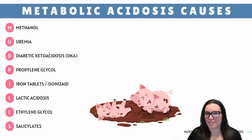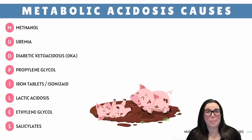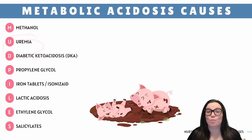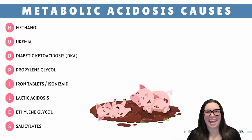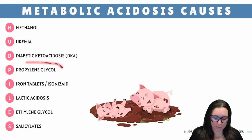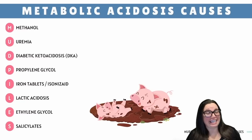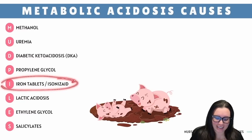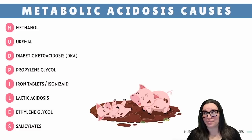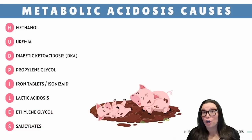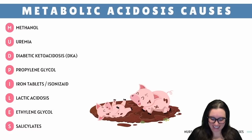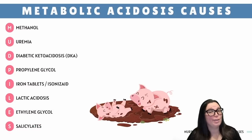So what about those metabolic acidosis causes? I present the greatest memory trick: MUDPILES. M stands for methanol — don't drink random chemicals. U stands for uremia, that's renal failure at its finest. D stands for diabetic ketoacidosis, DKA — hello, high blood sugar meltdown. P stands for propylene glycol, found in antifreeze. I stands for iron tablets and isoniazid overdoses. L stands for lactic acidosis, our anaerobic metabolism's drama queen of the moment. E stands for ethylene glycol — antifreeze is for cars, not cocktails. And S stands for salicylates, aspirin overdoses where you pop one too many and you're in trouble.